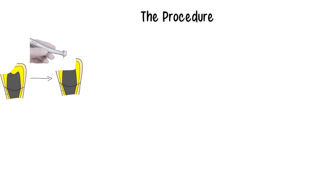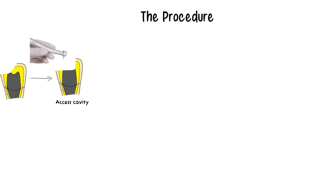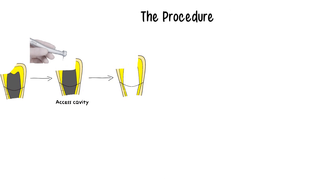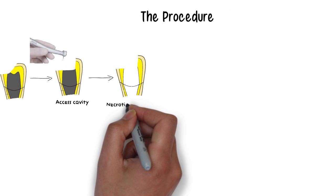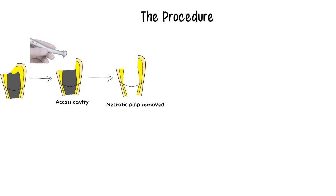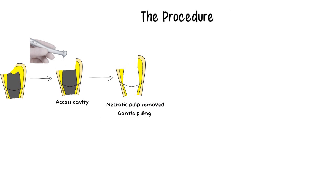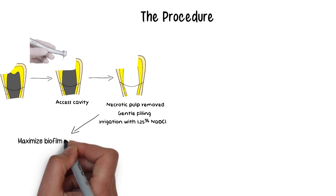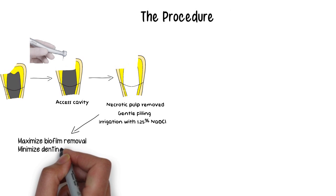After local anesthesia and isolation, an access cavity is made to get access to the necrotic pulp. The entire necrotic pulp is removed with gentle circumferential filing, with a working length slightly short of the radiographic apex in order to avoid over-instrumentation, along with irrigation with 1.25% sodium hypochlorite. The objective is to maximize cleaning by disrupting the biofilms on the canal walls along with irrigation and minimal dentinal removal.